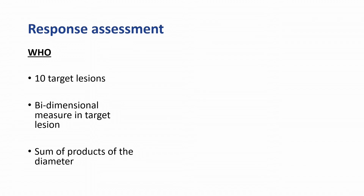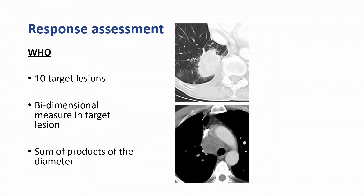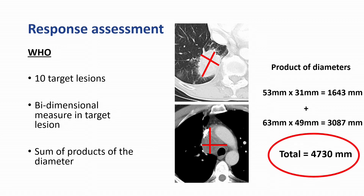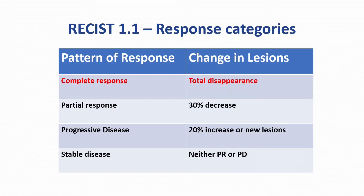With WHO, you can measure up to 10 target lesions. You perform a bidimensional measurement in each lesion, multiply those together, add them up, and get a total tumor burden which you then track over time. With RECIST, depending on whether things get better or worse, we put patients into one of four categories: complete responders, those with a partial response, those with progressive disease — which is a 20% increase in tumor burden or any new lesion developing anywhere — or those with stable disease.